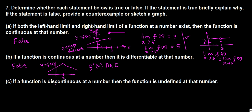Part C: If a function is discontinuous at a number, then the function is undefined there. This is false. Look at our earlier example — the function had a jump discontinuity, but the function value at 3 is defined to be 5.